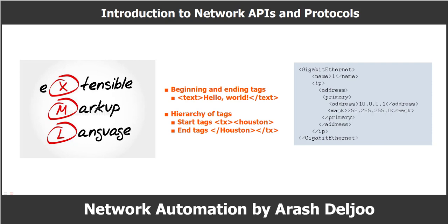XML, or Extensible Markup Language, is a markup language similar to HTML that was designed to store and transport data. XML is data wrapped in tags and is both human-readable and system-readable. For example, tags have a starting tag and an ending tag with a slash before the closing tag, such as: <text>Hello World</text>. XML also supports a hierarchy of tags. This figure shows an example of XML for a GigabitEthernet interface, with tags for the interface name, IP address, primary address, and subnet mask.